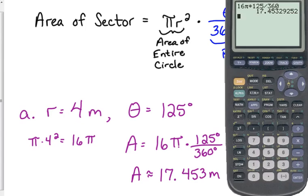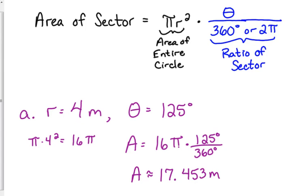So the area of this sector of the circle is approximately 17.453. Remember, we always need units. If we're doing an area, what do we do for our units? Square. Because we multiplied the radius times itself, so we have meters times meters, so our area is going to be in meters squared.